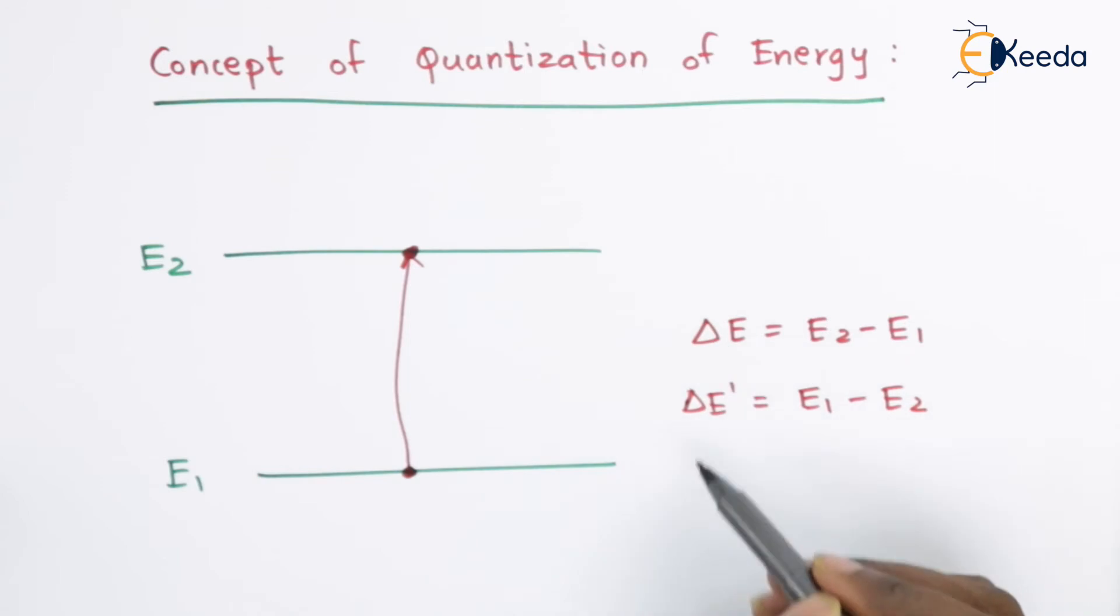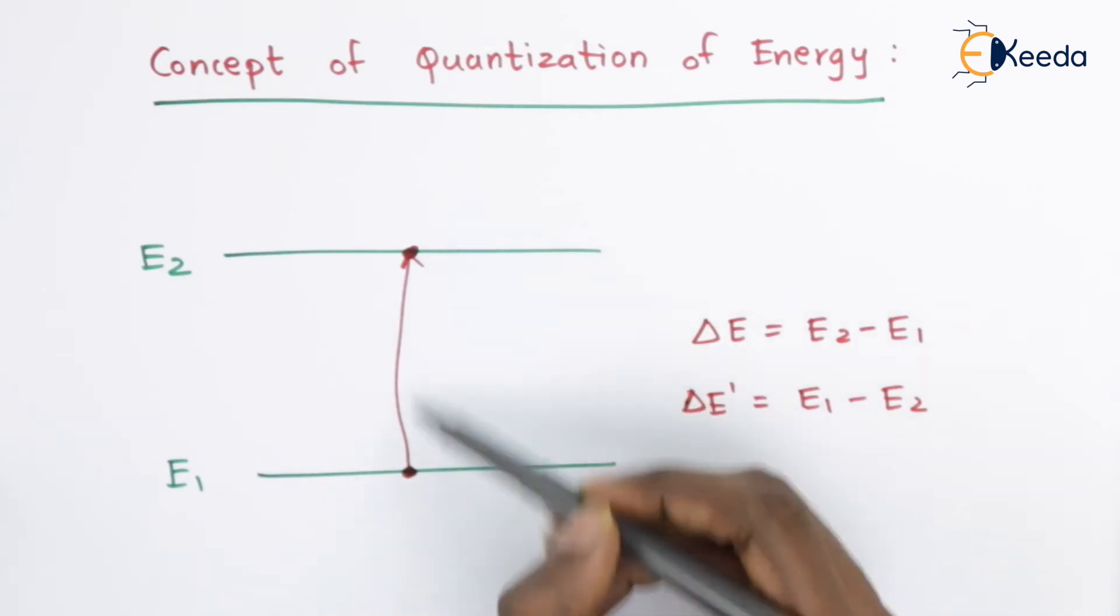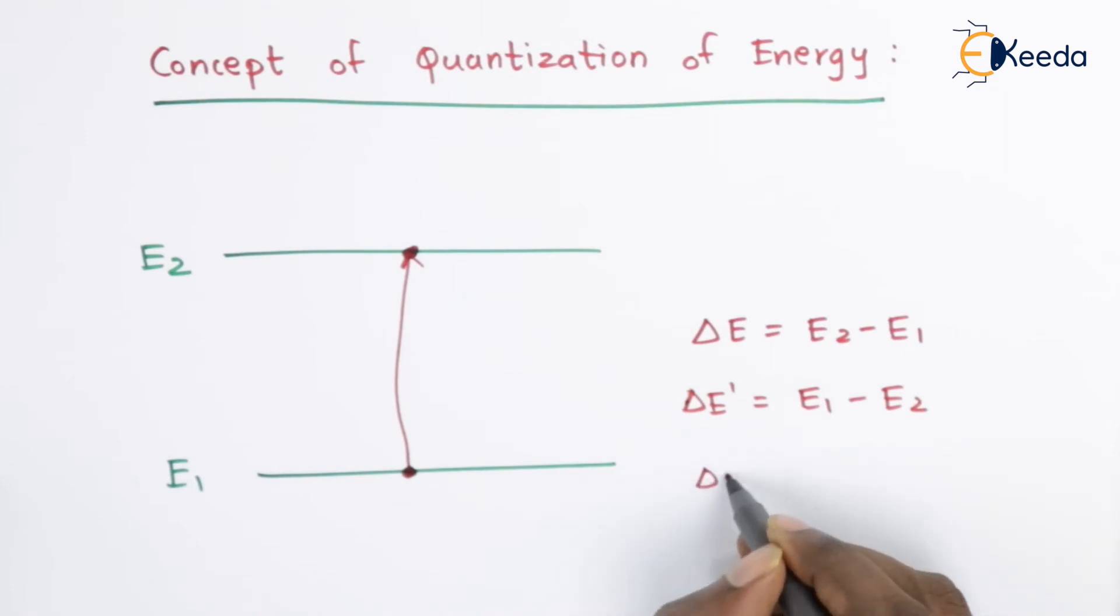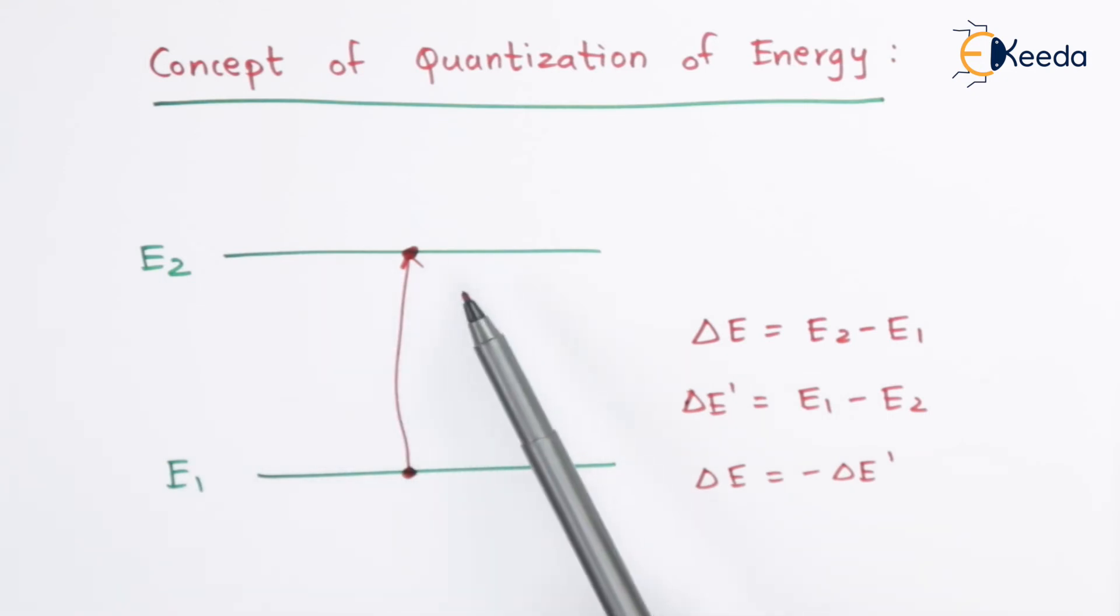The magnitude of this energy level or the difference between these two energy levels is the same, and that is why delta E equals minus delta E dash. If we have to excite the electron, we provide energy delta E. If the electron is present in the higher orbit and jumps down, it will emit the same magnitude of energy. All electrons present in different shells in a particular atom have different energy. This is the concept of quantization of energy that was given by Bohr.